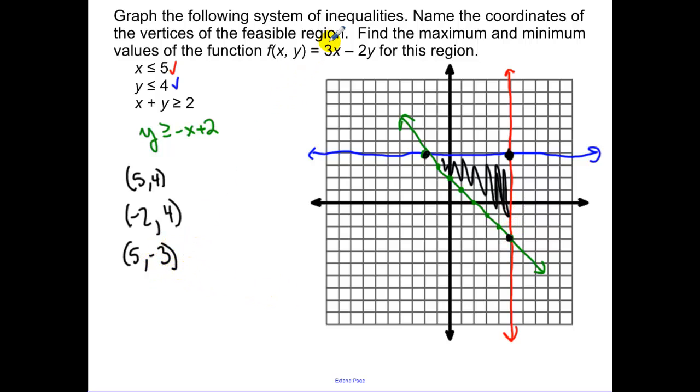Now what you have to do is you have to plug these into our objective function. This function right here, that's our objective function. And I want you to show me the plugging in. So I want you to show me the 3 times the 5 minus the 2 times the 4. And then I simplify that, and I get positive 7.